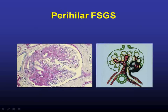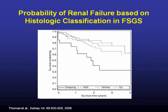Why is it important to make these distinctions? There are differences in renal survival. The collapsing variant has the worst renal survival. The tip lesion was thought to have the best prognosis and be most responsive to therapy, though as you get several years out it crosses over with the NOS variant. The perihilar variant may be a little worse because it's usually secondary to other causes and less amenable to immunosuppression therapy.